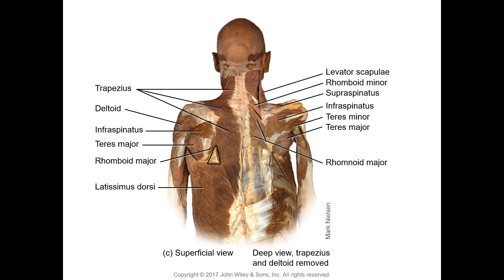Make sure you can identify the trapezius with its upper, middle, and lower fibers; the deltoid over the shoulder; infraspinatus, teres major, teres minor; and the latissimus dorsi. On the right deep view: levator scapulae, rhomboid major and minor, supraspinatus, infraspinatus, teres minor, and teres major. Labeling: number seven is rhomboid minor, number eight is supraspinatus, number nine is infraspinatus, number ten is teres minor, number eleven is teres major, number twelve is rhomboid major.